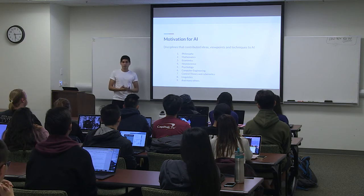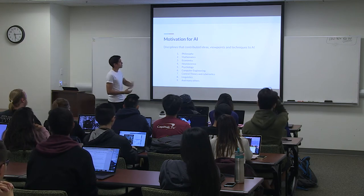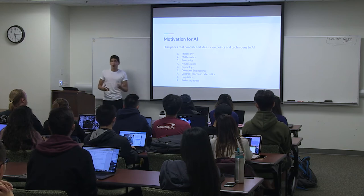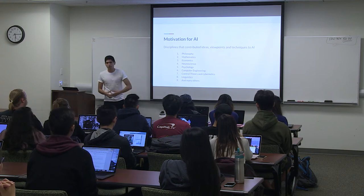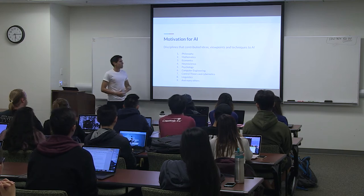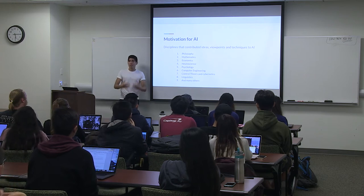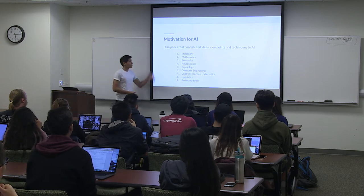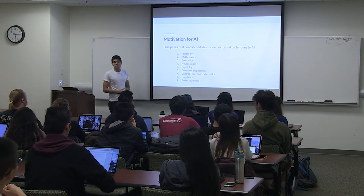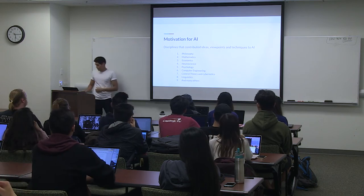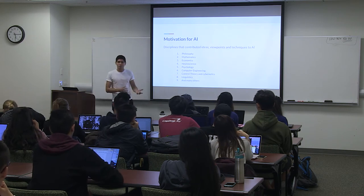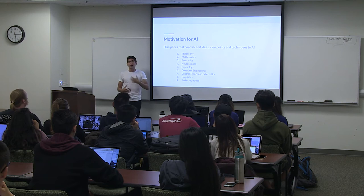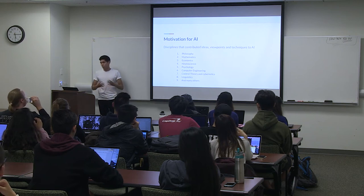Many disciplines have contributed viewpoints and techniques to artificial intelligence — philosophy, mathematics, linguistics, and psychology. The reason I bring this up is that AI is actually a multidisciplinary field. You don't have to be a computer scientist or an engineer to learn AI or make an impact in it. That's also why there's a lot of debate, not just about the algorithms of AI, but also about the ethics and different techniques we could use to improve it.